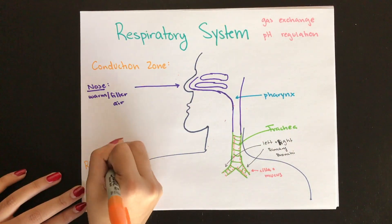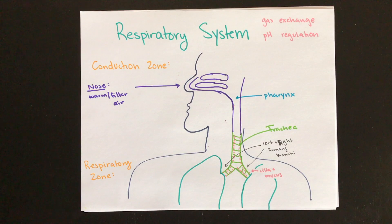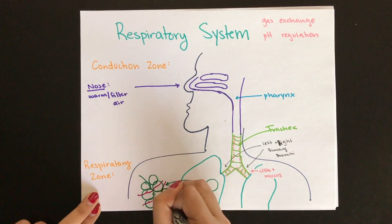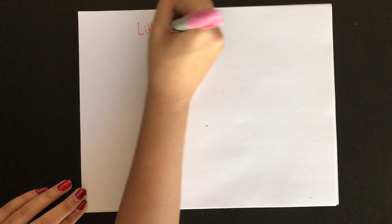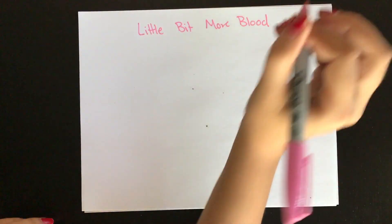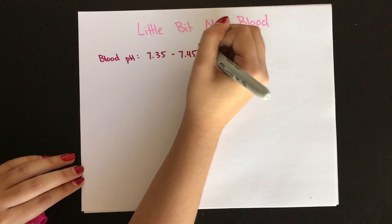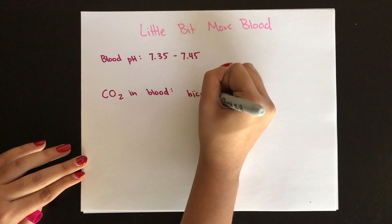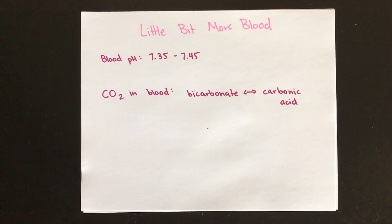Next is the respiratory zone, where gas exchange occurs. The smallest bronchioles have extremely thin walls and form a bubble shape called alveoli — they almost look like bunches of grapes. Capillaries surround the alveoli, allowing for extremely easy gas exchange. It's important to remember that blood pH needs to stay in a narrow range from 7.35 to 7.45. Because carbon dioxide doesn't dissolve easily in blood, it is converted into carbonic acid, which is dangerous for maintaining this range, so the body creates a buffer known as the bicarbonate ion.